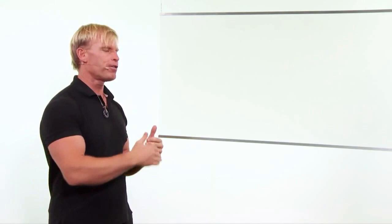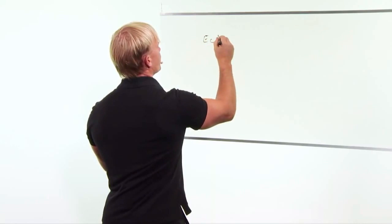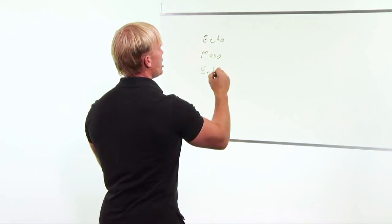And inside it, he showed the three basic body types. There's an ectomorph, there's a mesomorph, and there's an endomorph. The ectomorph tends to be very lean, tall, thin, with low body fat and high metabolism.